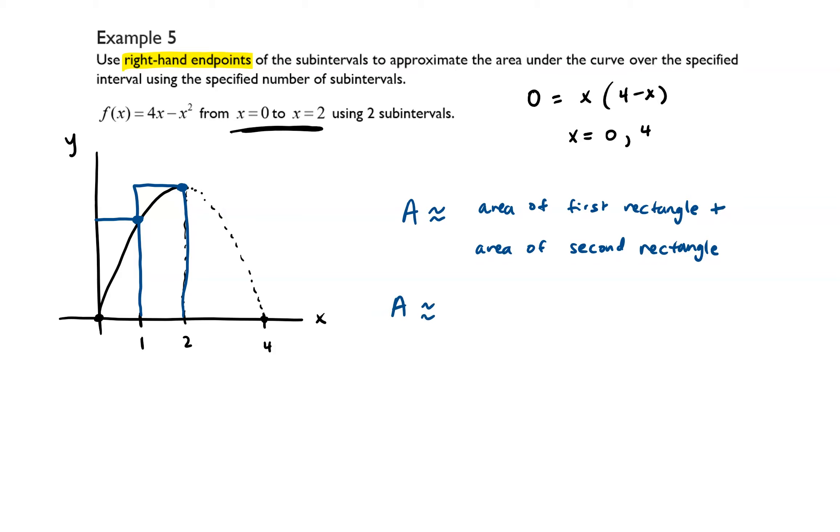The first rectangle has a base of 1 and a height of, since our x value is x1, then we need to plug that into our function. So essentially we're evaluating f of 1 and that's going to be 4 times 1 minus 1 squared, which is equal to 4 minus 1, which is equal to 3. So the height of our first rectangle is 3.